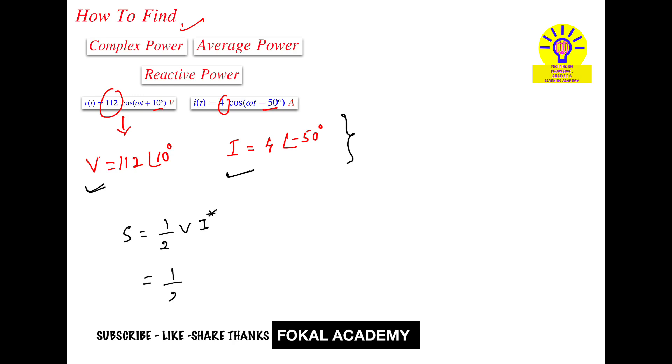So, half of voltage is 112∠10°, and current conjugate—changing the phase angle sign—is 4∠50°.